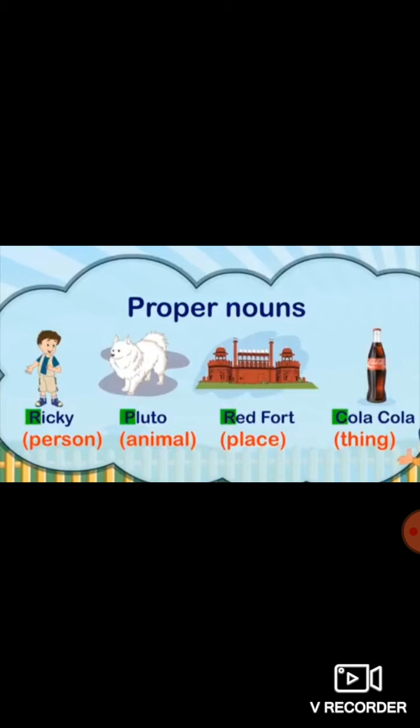Ricky is a special name given to a boy; Pluto is a special name given to a dog; Red Fort is a special name given to a place; Coca-Cola is a special name given to a cold drink. You will notice these names are highlighted because proper names always begin with a capital letter. So Ricky, Pluto, Red Fort, and Coca-Cola are all proper nouns. Clear?